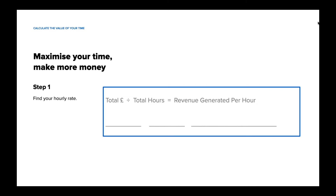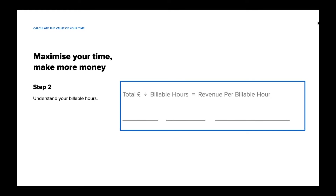Divide the total revenue by the total hours worked to find your revenue generated per hour. Now you know the total revenue generated per hour worked. It's good to know your revenue per hour, but it doesn't quite tell you what your time is worth — chances are some of those hours were taken up by administrative tasks that others without your home remodeling and design expertise could be doing. A more accurate way is to look at your revenue generated per billable hour.